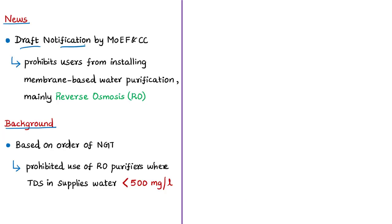The draft notification prohibits users from installing membrane-based water purification systems, mainly reverse osmosis systems, in their homes. This prohibition is applicable if the water has been sourced from a supply that meets Bureau of Indian Standards drinking water norms. The ministry issued this draft notification to comply with an order of the National Green Tribunal, which prohibited use of RO purifiers in places where TDS in supplied water is below 500 milligrams per liter.